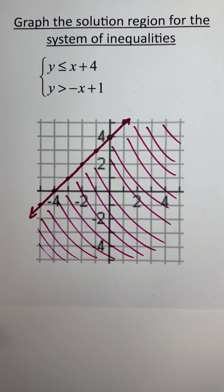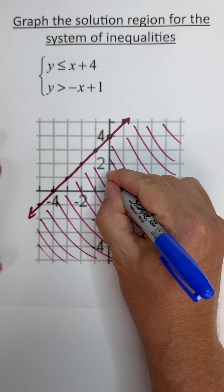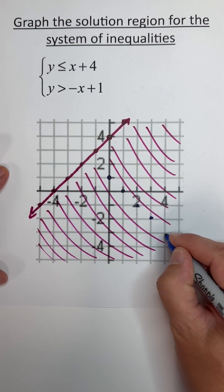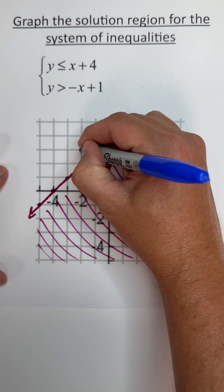Now we're going to get the other line. It's got a y-intercept of positive 1, and it's got a slope of negative 1. So down 1 and to the right 1, or up and to the left.